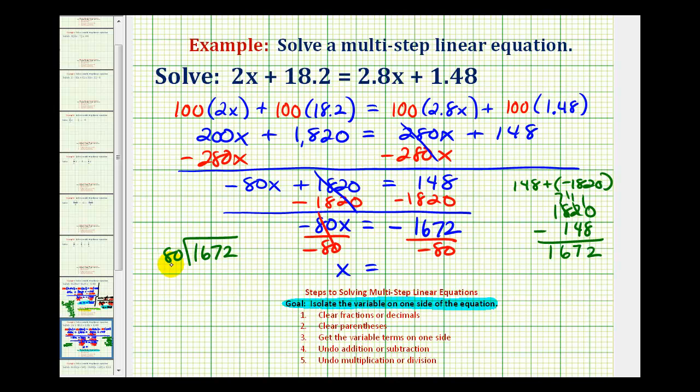So we need to figure out how many 80's there are in 167, that's going to be 2. 2 times 80 is 160. Here we have a difference of 7. Bring down the 2. There are 0 80's in 70. So we put a 0 here, 0 times 80 is 0. Subtract, that's 72.